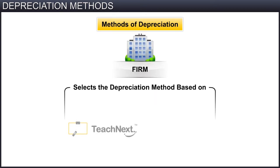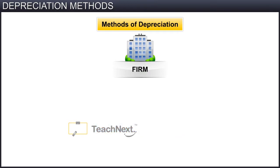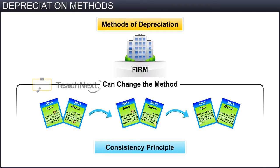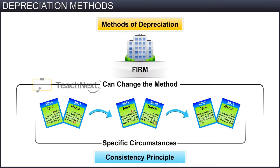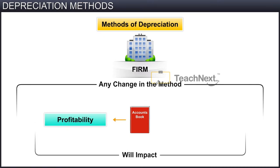A firm selects the depreciation method based on the type of asset, the nature of the use of such asset, and the circumstances prevailing in the business. Whatever method the firm applies, it should always follow the same method from one year to another. As per the consistency principle, a firm can change the method of depreciation only under specific circumstances, and the effect of such a change should be brought into the books of accounts, as any change will impact the profitability and financial position of the business.